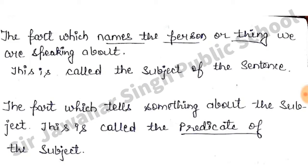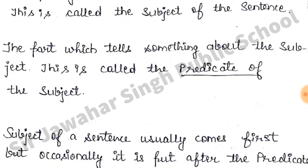The part which names the person or thing we are speaking about is the subject. And the part which tells something about the subject is called the predicate of the sentence.